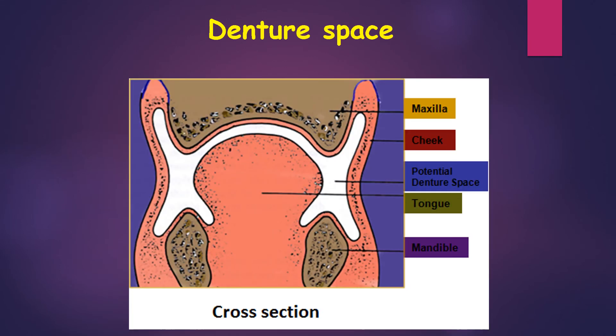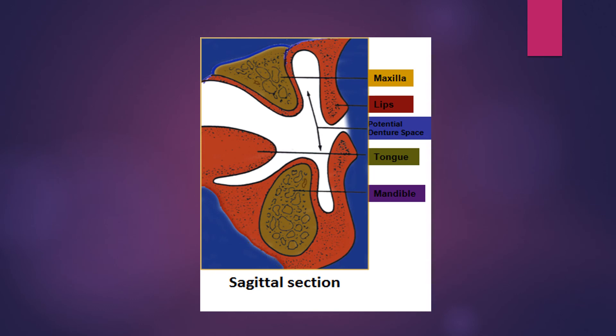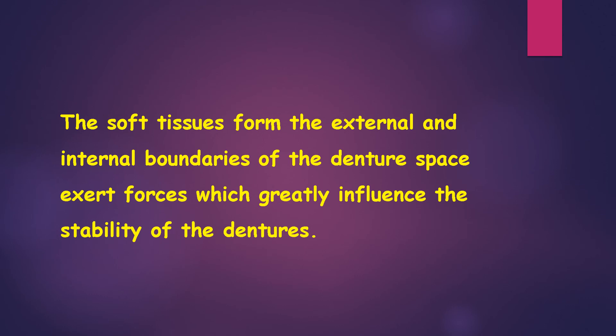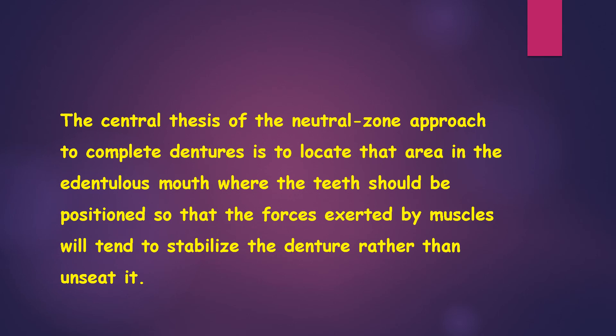This diagram shows the neutral zone concept. This is the danger space, and here is the potential danger space — shown in both cross section and sagittal section. Soft tissues form the external and internal boundaries of the danger space and exert forces which greatly influence the stability of the dentures. The central thesis of the neutral zone concept in complete dentures is to locate the area in the patient's mouth where the teeth should be positioned so that the forces exerted by muscles will tend to stabilize the denture rather than unseat it.